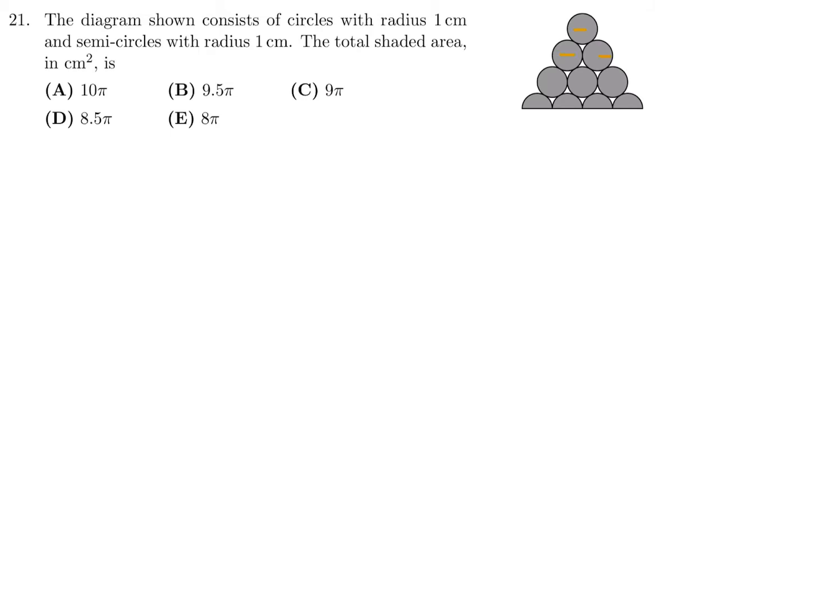We have 1, 2, 3, 4, 5, 6 full circles, so 6 times pi r squared, that total area is going to be, plus we have 1, 2, 3, 4 semicircles, and each semicircle has an area of pi r squared divided by 2.